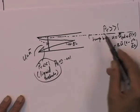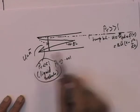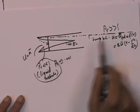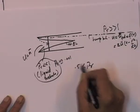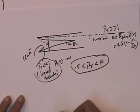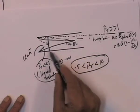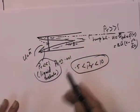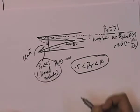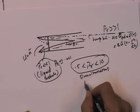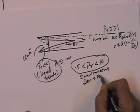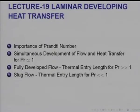So one can make very suitable approximations for these two extreme cases and obtain solutions. But when Prandtl number is between 0.5 and 10, then both velocity and temperature profiles will develop at comparable rates. That is the case called the simultaneous development of flow and heat transfer.